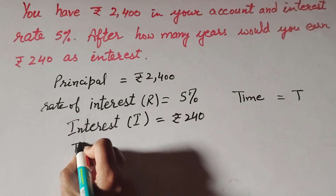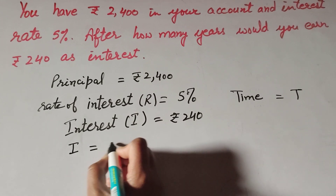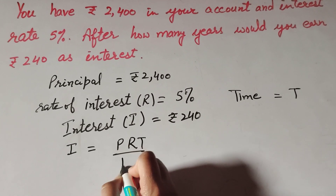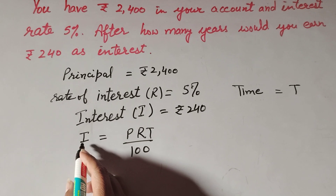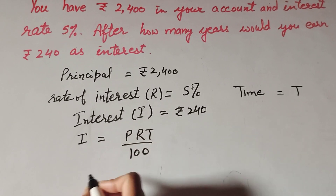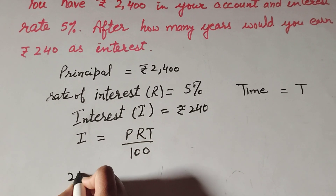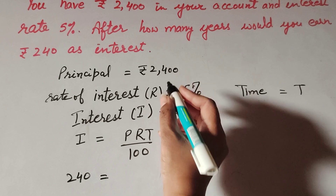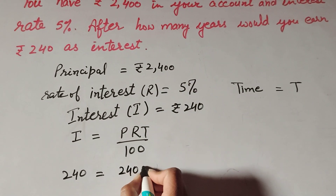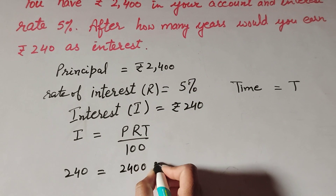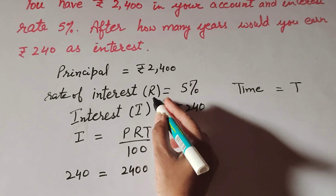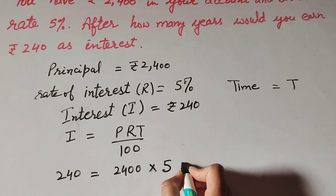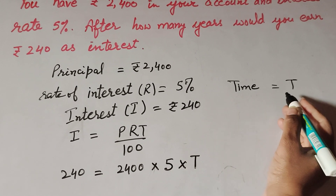We know the formula to find interest: I is equal to P times R times T over 100. In this formula, I is interest: 240 equals P, which is principal 2400, multiplied by R, which is rate of interest 5, multiplied by time T.